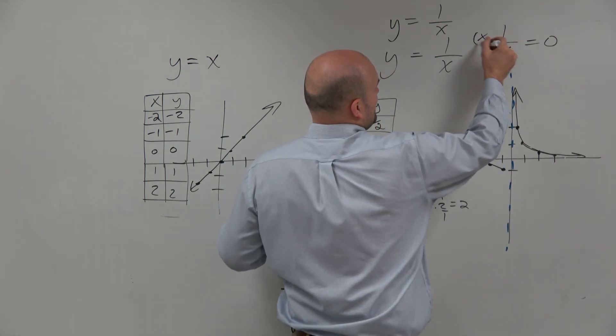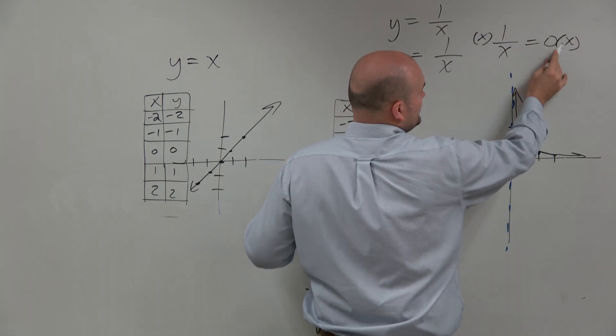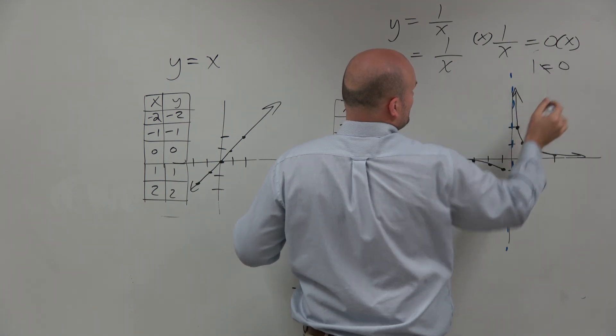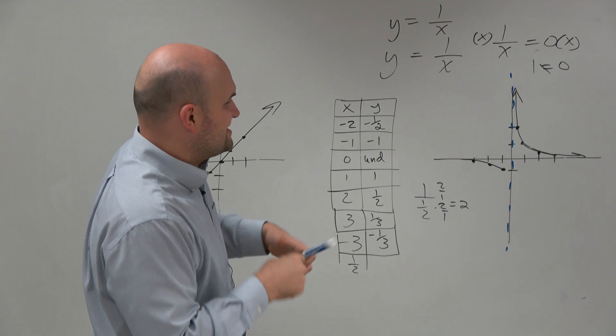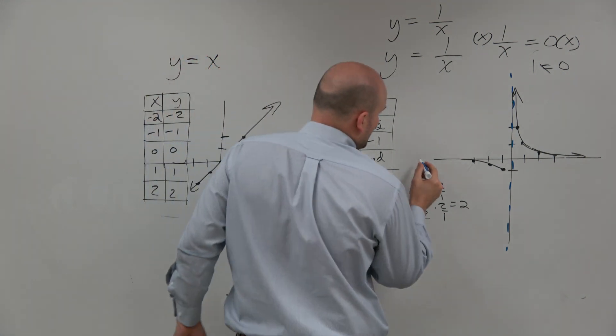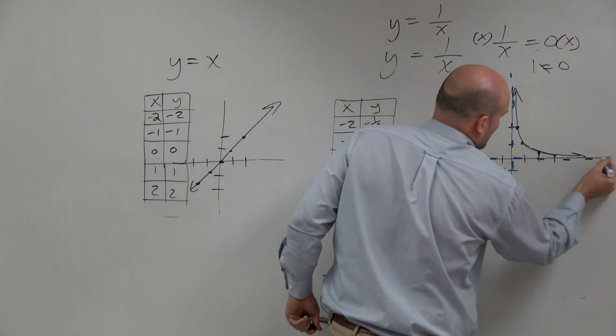If you were to solve for x, multiply by x on both sides, you can see that 1 = 0. So whatever number we plug in for x is never going to equal 0. So there's actually a horizontal asymptote there as well.